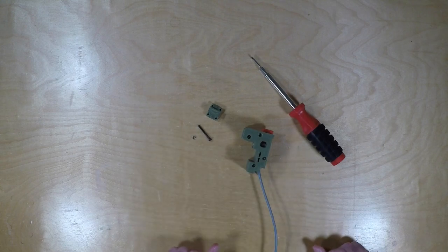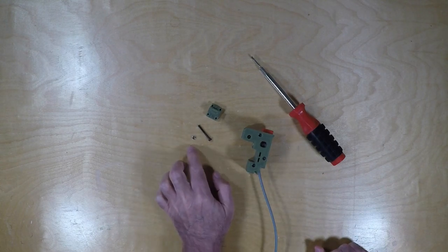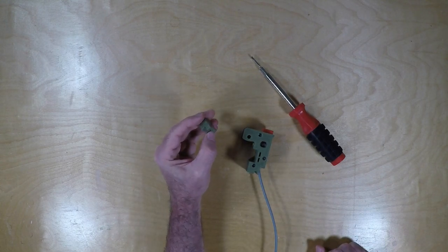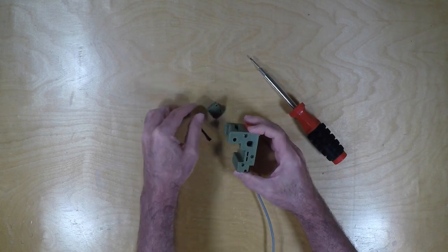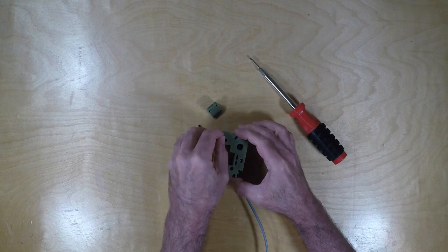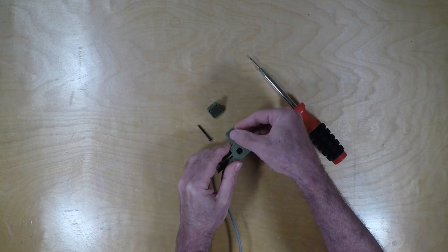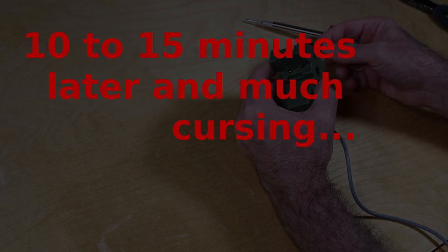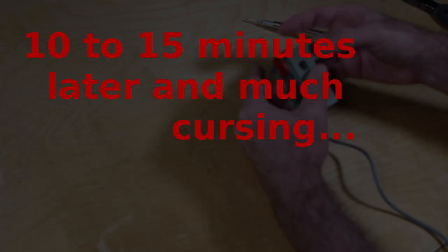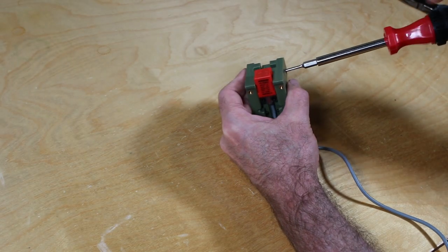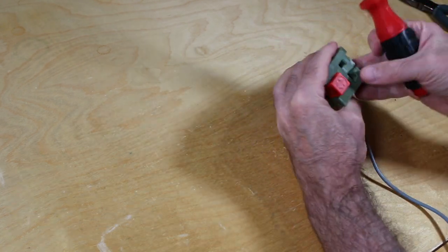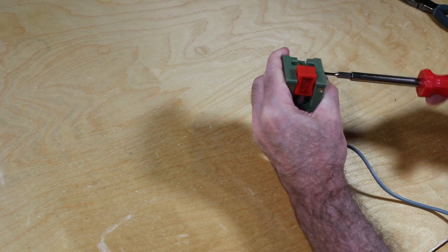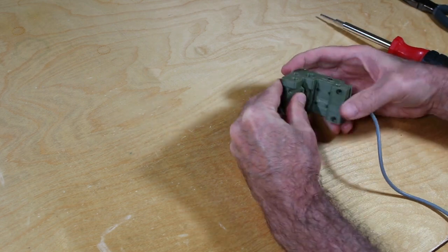Next we insert the pivot block with an M3 by 30 screw and nut. And again for me this nut was a really tight fit. I didn't make this really tight, I left it kind of loose because we'll want to work with the play in this once we mount it to the linear rail.